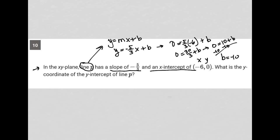So that means I know that my equation now is y equals negative five-thirds x minus 10.